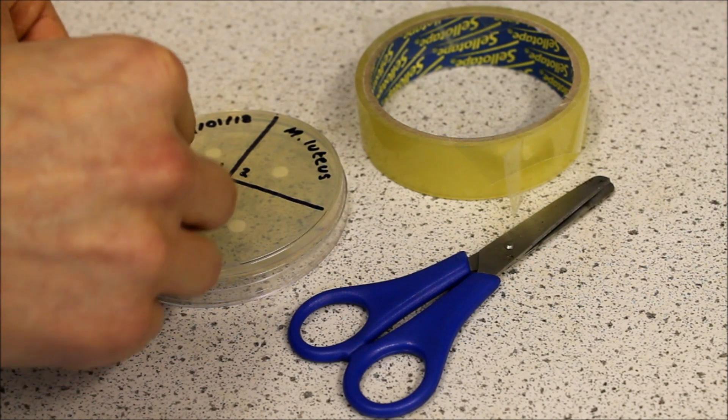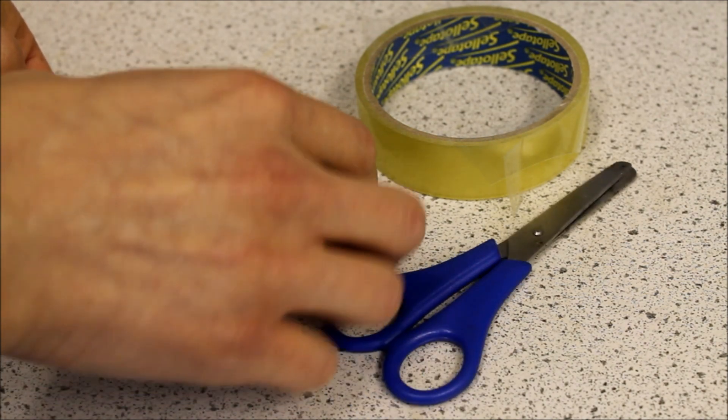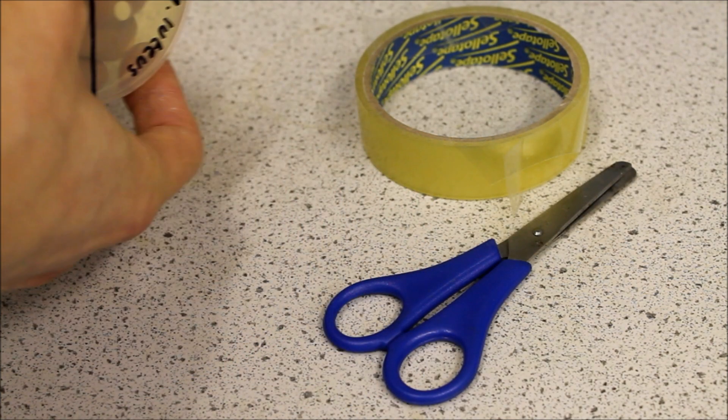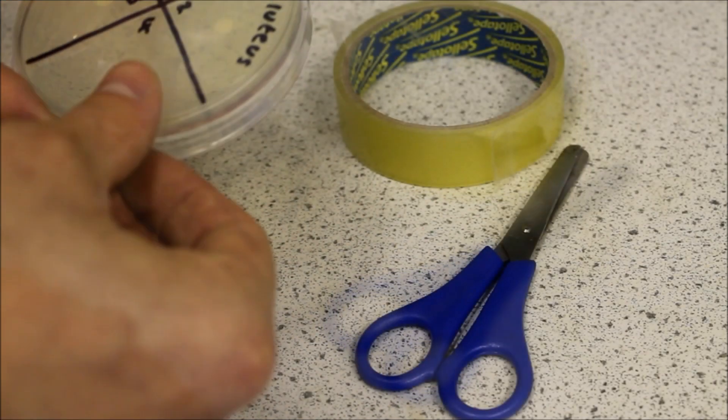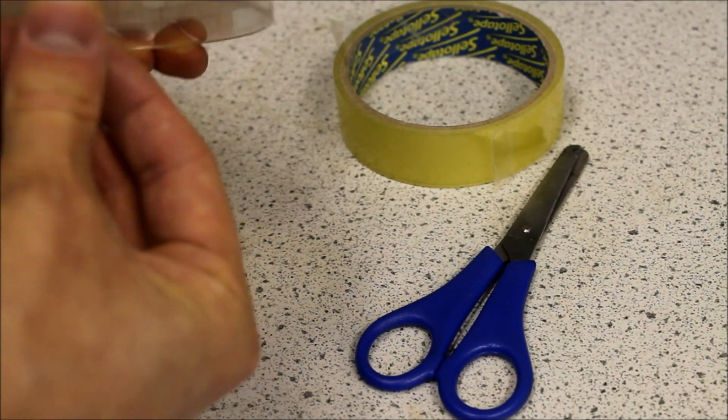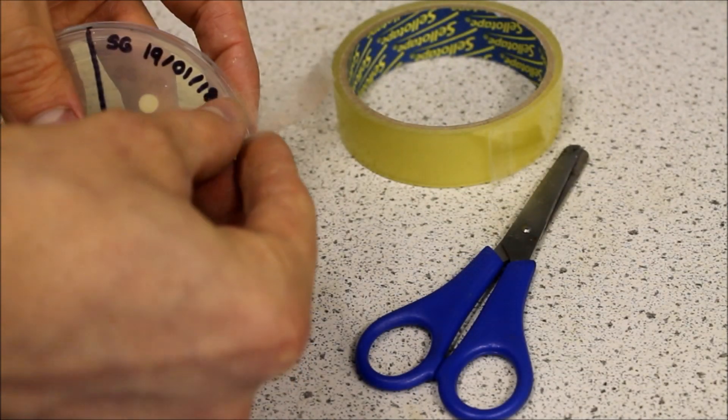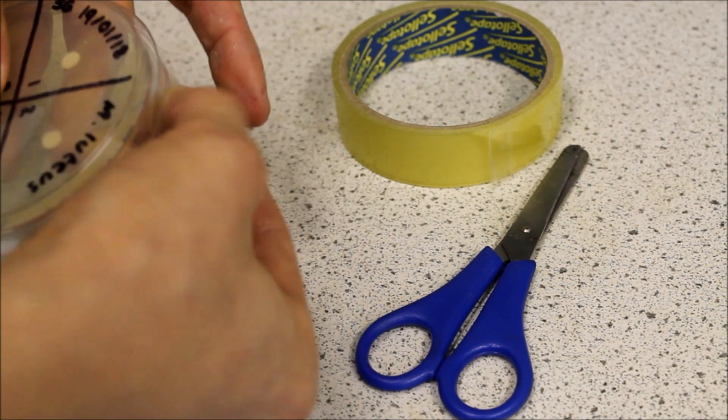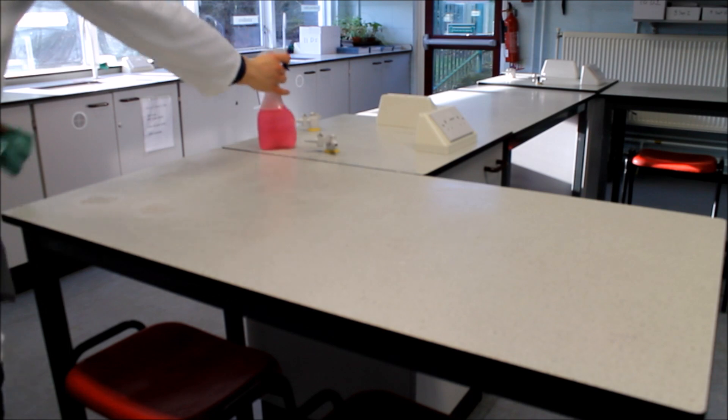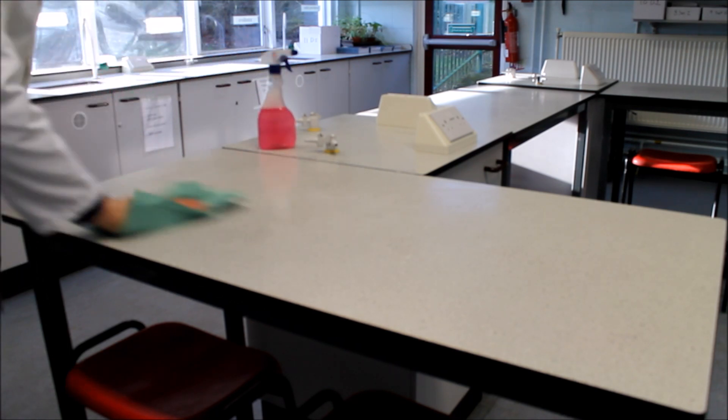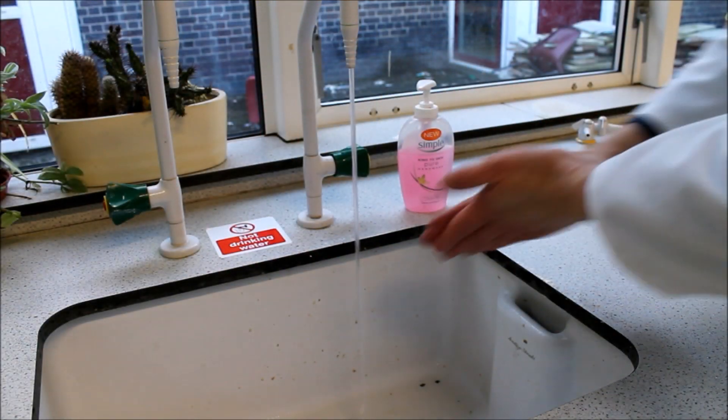In the fourth section place a paper disc without any antiseptic. This will be your control. Use three strips of sellotape to attach the lid to the agar plate in three separate places. Do not seal the lid all the way around as the anaerobic conditions can cause growth of hazardous bacteria. You must now clean the desk again with disinfectant and wash your hands again using antibacterial soap and running water.